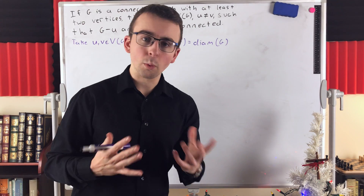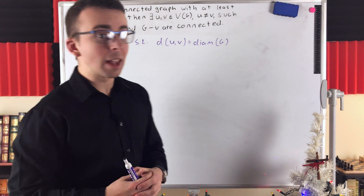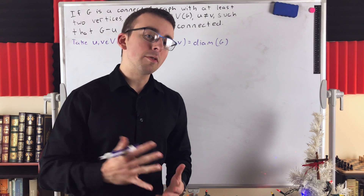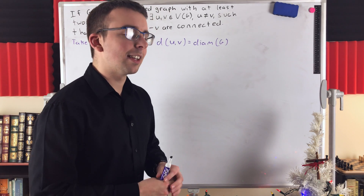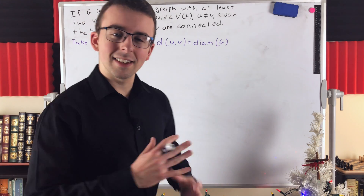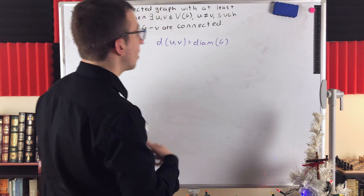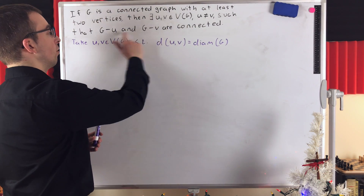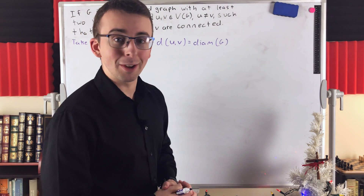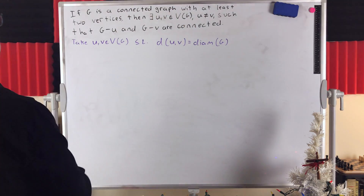How do we know that two vertices like this will work? How do we know that subtracting either of them will not disconnect the graph? You might find it yourself by experimenting, writing out graphs and pinning down a characteristic of vertices that always seems to lead to this being true. Then it would be on you to prove that it always works, which is what we'll be doing in this video.